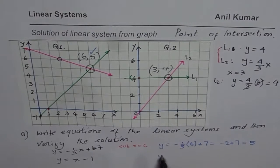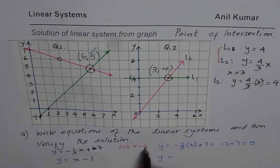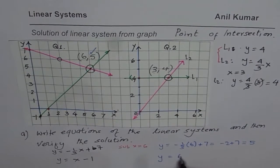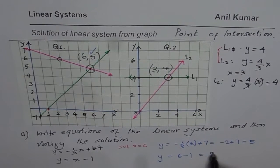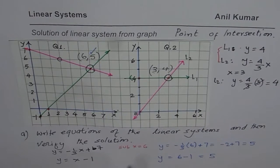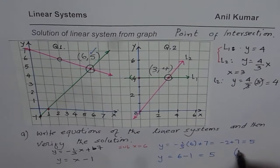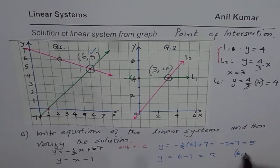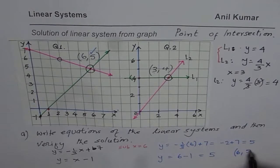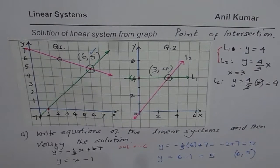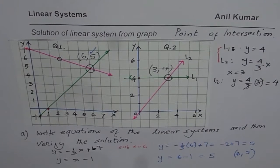For the second line, y equals, I am substituting 6 for x, 6 minus 1, which is again 5. So for both the lines, we do get a coordinate point 6 x coordinate and y coordinate of 5, which satisfies. This is how you can verify your solution also.